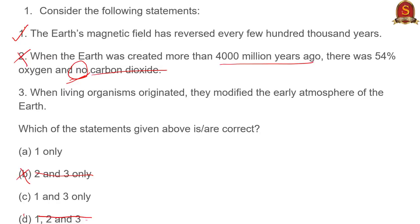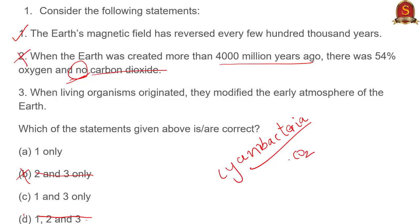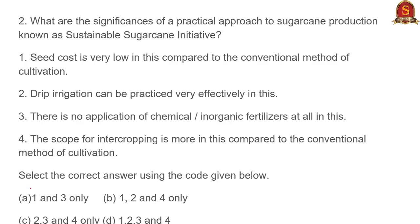With B and D eliminated, statement one is automatically correct. Statement three — when living organisms originated, they modified the early atmosphere — is supported by basic reading: cyanobacteria were the first organisms to perform photosynthesis, taking in carbon dioxide and releasing oxygen, thereby changing the early atmosphere. Since statement three is correct, the answer is C.